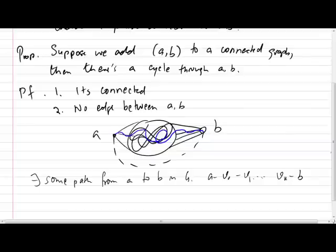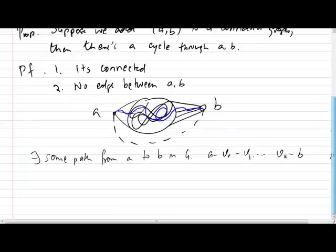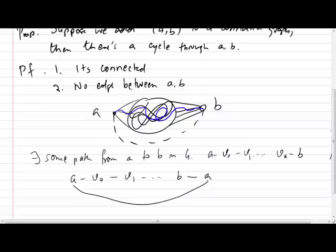So now we get the new path that looks something like A, V0, V1 all the way up to B and then A. And that's the proof that we got a cycle.